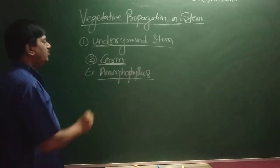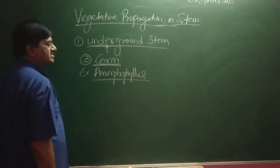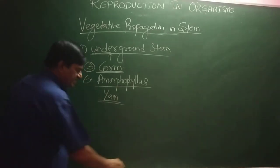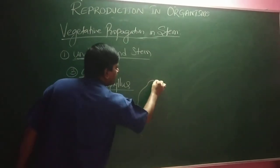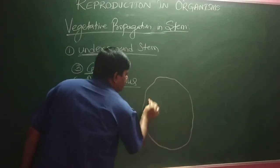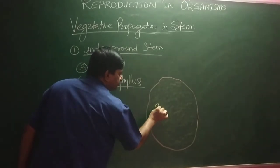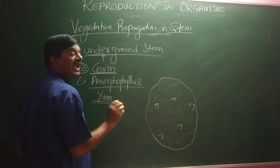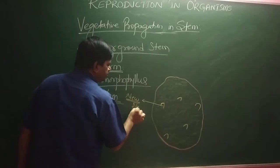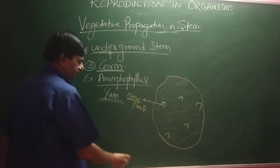The next type is called Corm. It is again an underground stem. Example is Amorphophallus, commonly called Yam. In this, there is a presence of a large, spherical underground stem, again covered by brownish scaly leaves. At the nodal region there is a presence of axillary buds, and when these axillary buds are pinched off, they give rise to new plants — so this also helps in vegetative propagation.